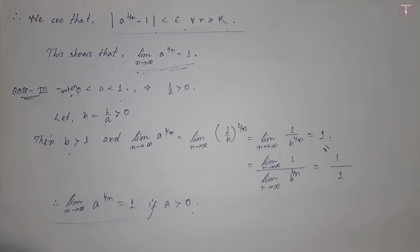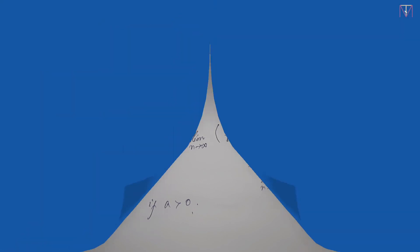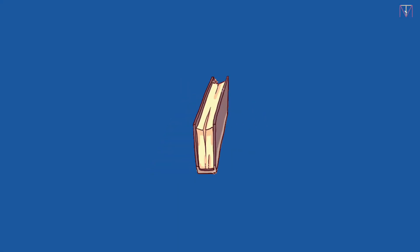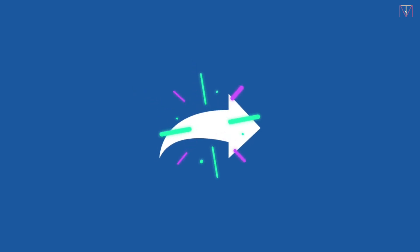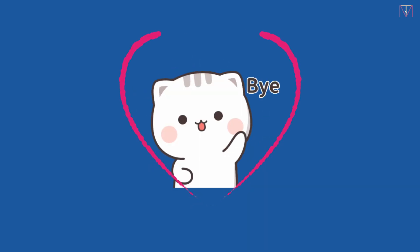It's all about the theorem: the limit as n tends to infinity of a to the power 1 by n is equal to 1 if a is greater than 0. This is one type of question on the limit of a sequence. I think it's clear for you, so I end this lecture here. If this video is helpful for you, please hit the like button and share this video with your friends. Goodbye.